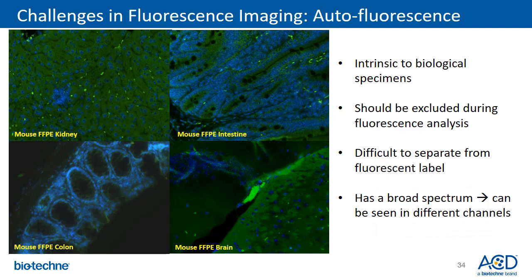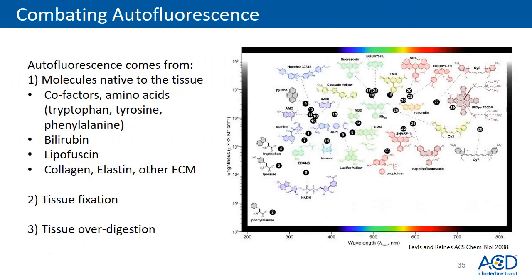One of the main challenges in fluorescence imaging is autofluorescence, which is intrinsic to biological specimens and should be excluded during image analysis. However, this may not always be easy, as it may be difficult to separate autofluorescence from real fluorescent signal. One way to distinguish autofluorescence is to check if the same signal is present in different channels, because autofluorescence usually has a wide spectrum making it visible through more than one channel. Autofluorescence may come from many different sources in tissues, including cofactors, amino acids, bilirubin, lipofuscin, collagen, and elastin.